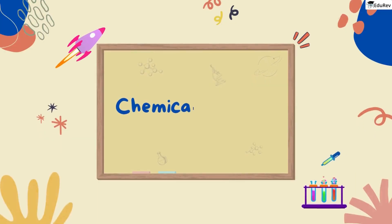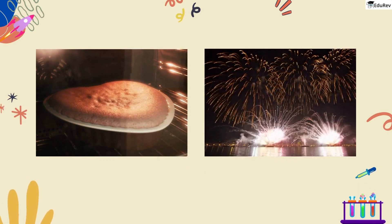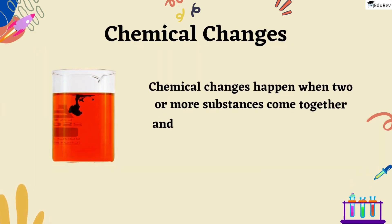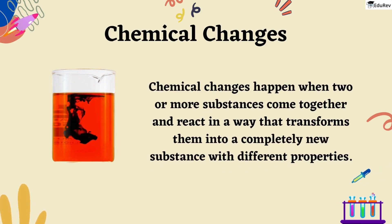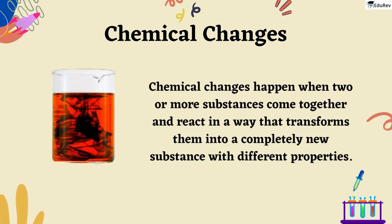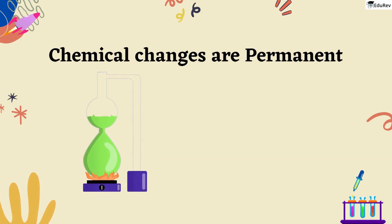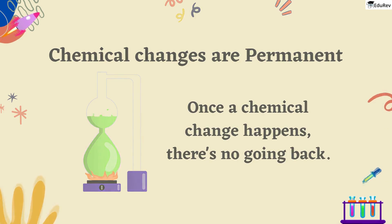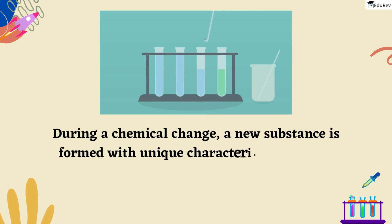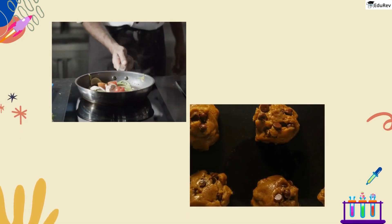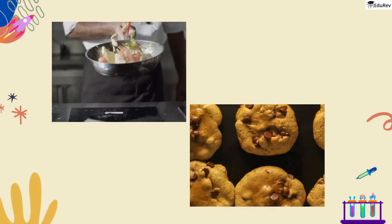Now let's move on to chemical changes. Students, have you ever seen a cake being baked or fireworks exploding in the sky? Well, those are examples of chemical changes. Chemical changes happen when two or more substances come together and react in a way that transforms them into a completely new substance with different properties. And chemical changes are permanent. Unlike physical changes that can be undone, once a chemical change happens, there is no going back. During a chemical change, a new substance is formed with unique characteristics that are different from the original substances.